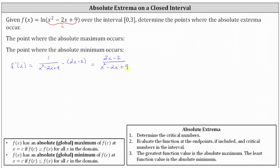Now that we have the derivative function, the critical numbers will be where the first derivative is equal to zero or undefined. The rational function equals zero when the numerator is zero and the denominator is non-zero. We set the numerator two x minus two equal to zero and solve: add two to both sides, then divide by two, giving us x equals one. It's important to verify the critical number is in the closed interval — and indeed, one is in the closed interval from zero to three.